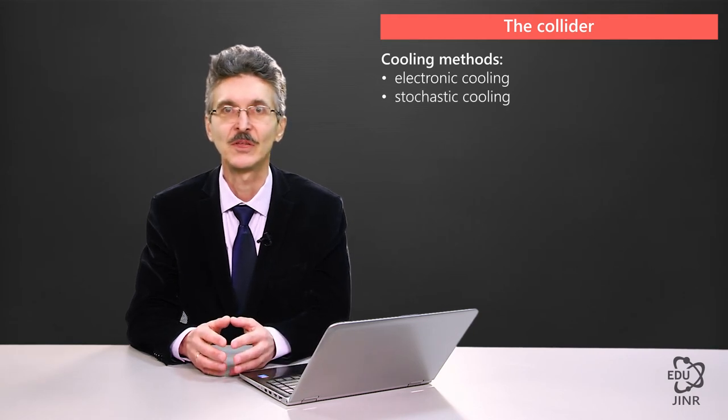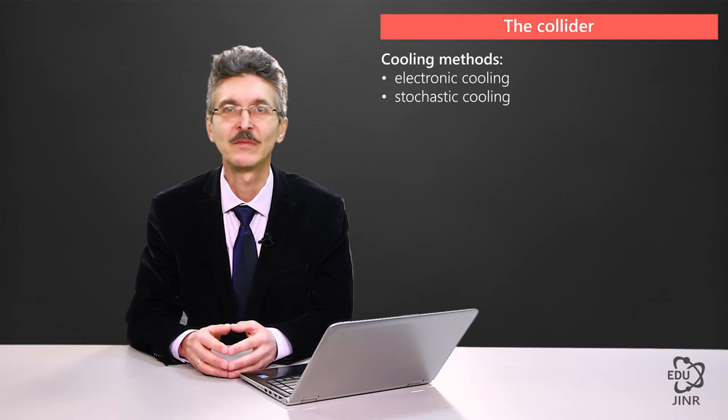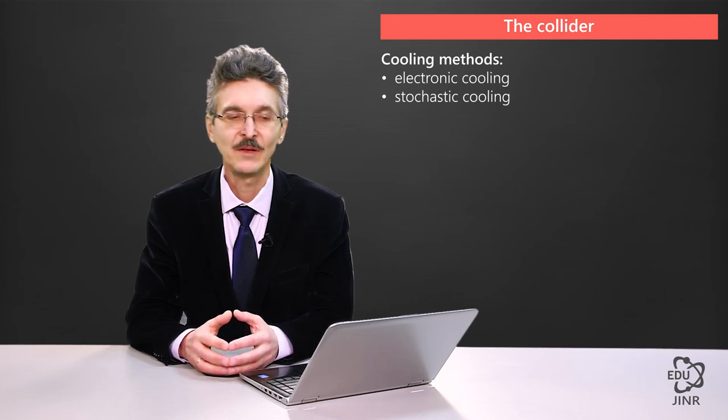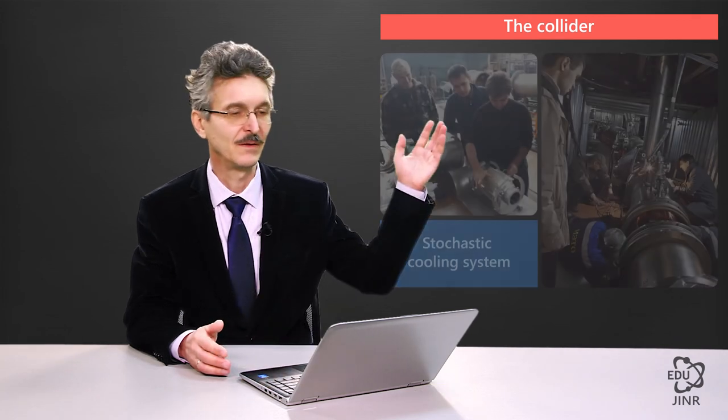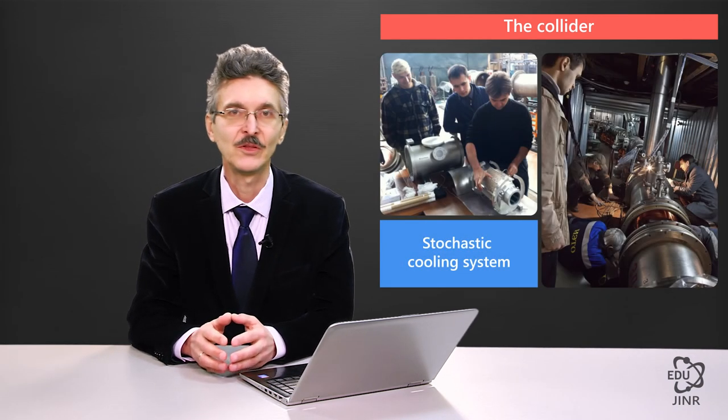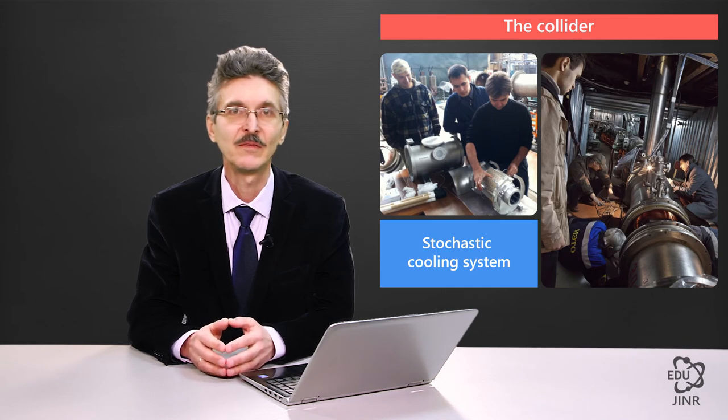The second cooling system that the collider is expected to have is the system of stochastic cooling. Neither the Soviet Union nor the Russian Federation holds any experience in the creation or operation of such systems. To learn this method, a test channel of stochastic cooling has been created on the nucleotron. Stochastic cooling consists of a receiving device, which measures beam parameters, a feedback line, which converts the signal, and a kicker, a device affecting the beam. Here you can see the assembly stages of the stochastic cooling system, which was created by means of close collaboration with the Jülich Research Center in Germany.